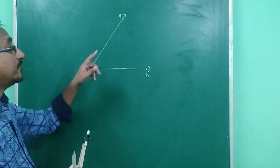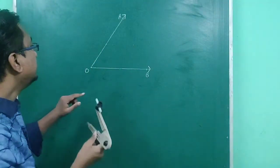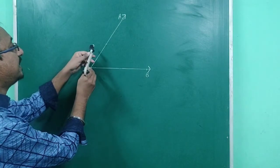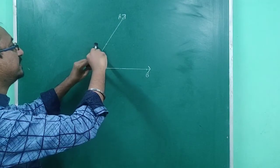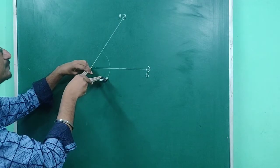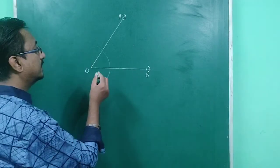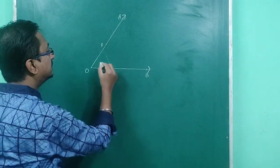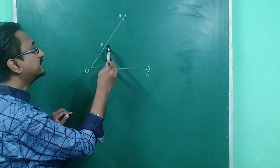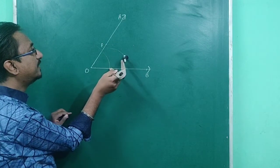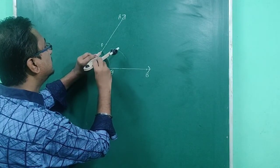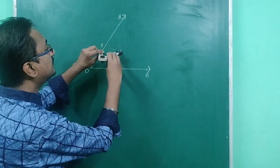Our angle is AOB. First we take O as the center and draw an arc with a convenient radius, which intersects AO at P and BO at Q. Then taking center Q, I draw an arc, and with the same radius taking center P, I draw another arc to cut the previous arc at point R.